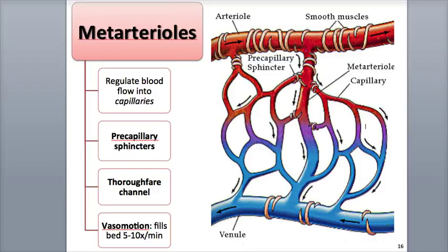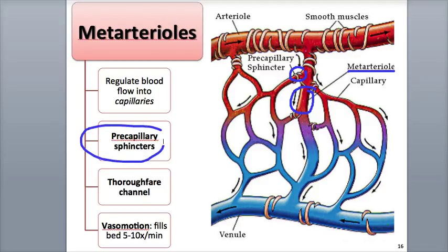The arteriole becomes narrow in a terminal region called the meta-arteriole, as it ends and meets the capillaries at the capillary junction. The smooth muscle cell located most distally at the meta-arteriole capillary junction forms the pre-capillary sphincter — a muscular valve that can contract and relax to regulate blood flow into the capillary.